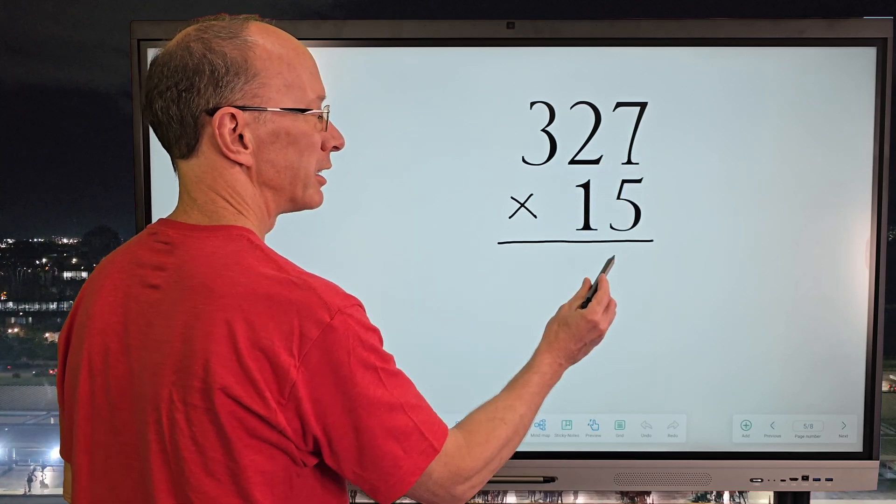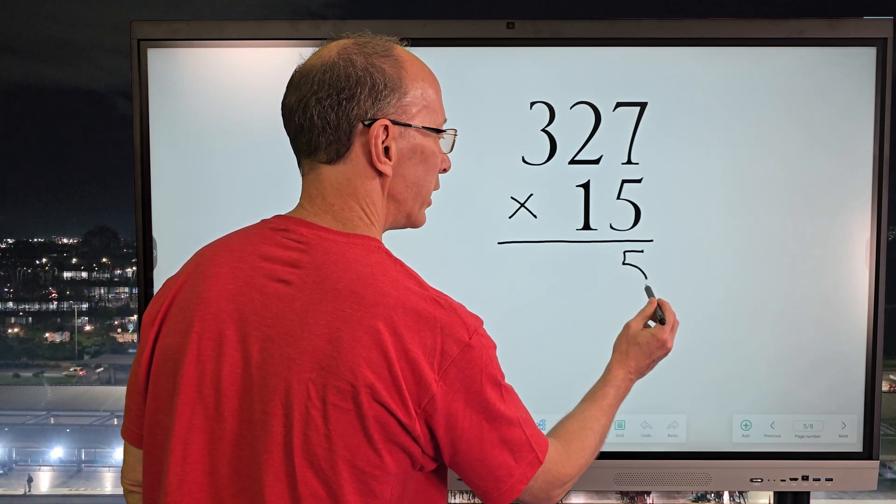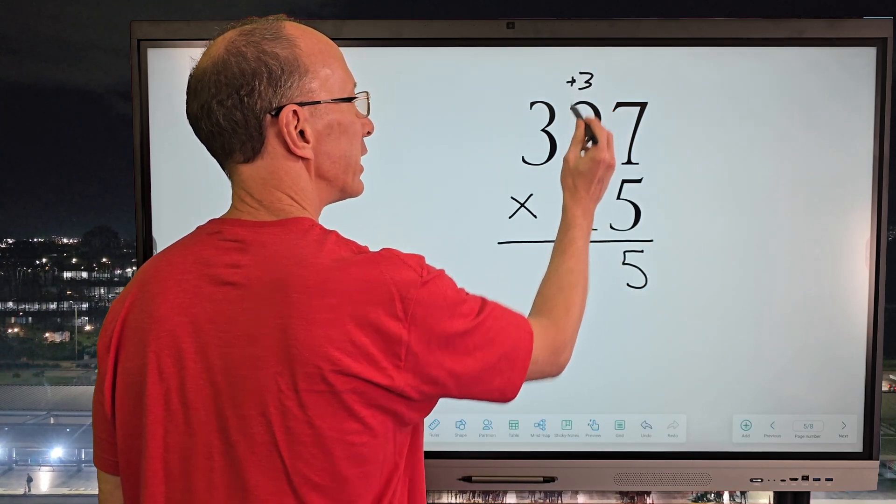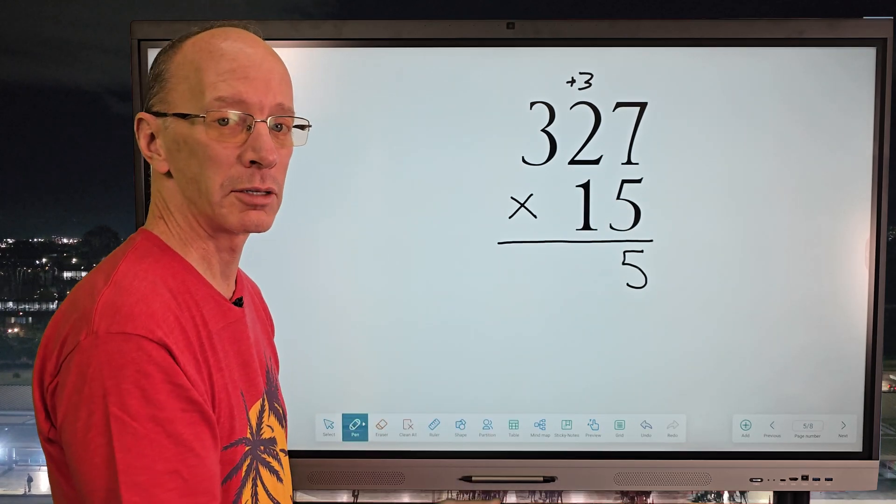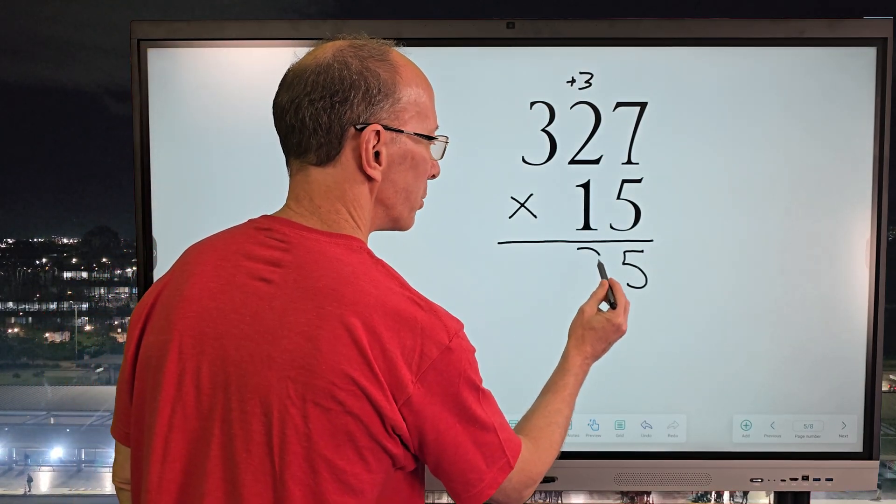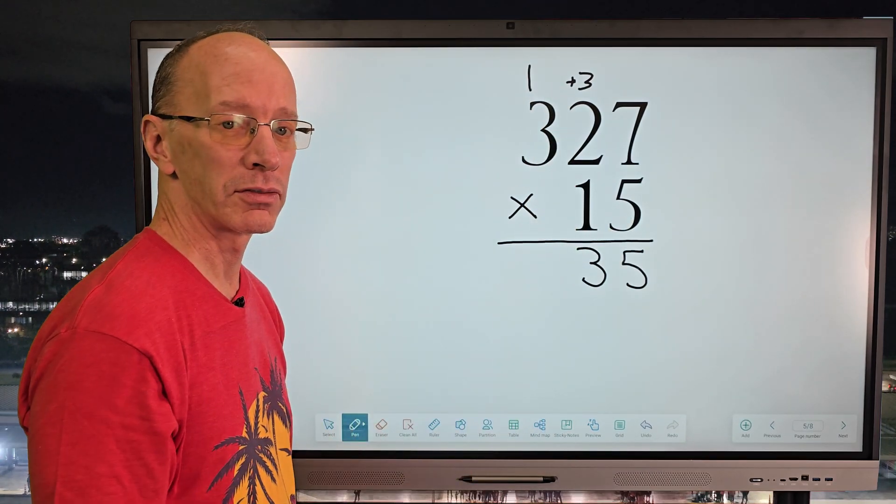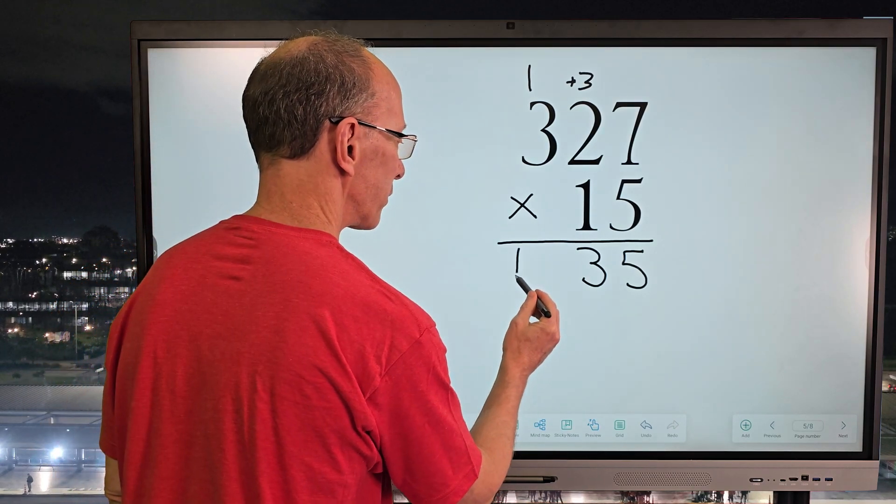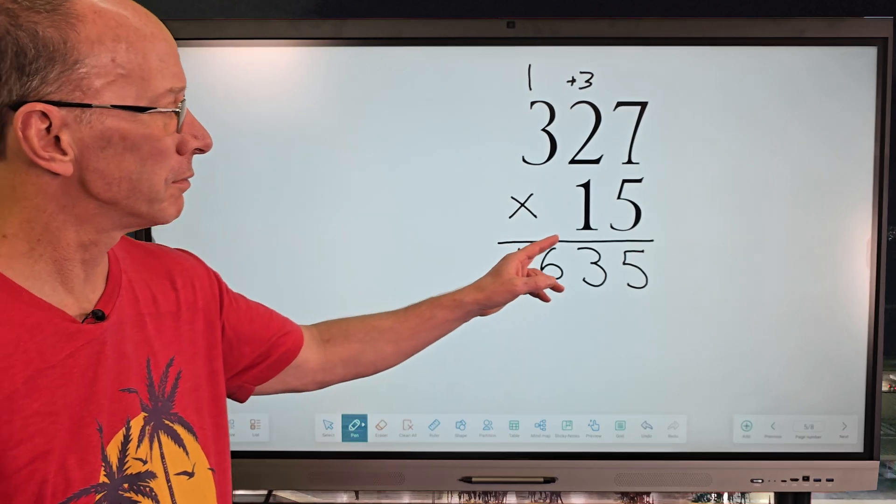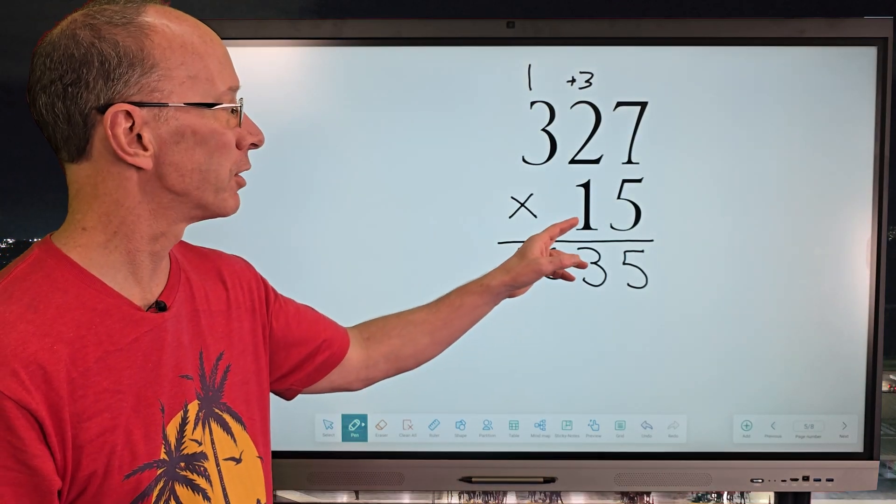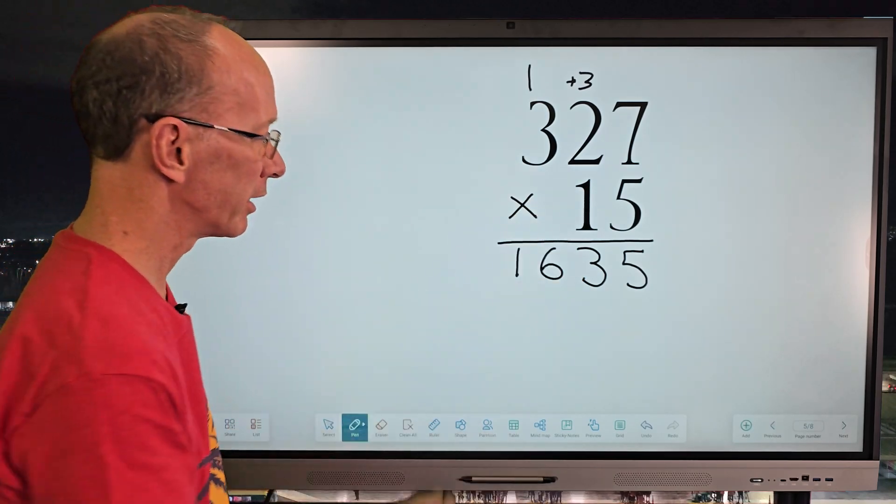So let's go ahead and multiply 7 times 5 equals 35. I put the 5 right here, carry the 3. We're going to add that in a little bit. So now 5 times 2 equals 10 plus the 3 would be 13. Put 3 here and the 1 up here. And then 5 times 3 equals 15 plus the 1 would be 16. Now with the 1, I love that because all I have to do is do 1 times 7, 1 times 2, 1 times 3. It's going to be 327. I'll show you.